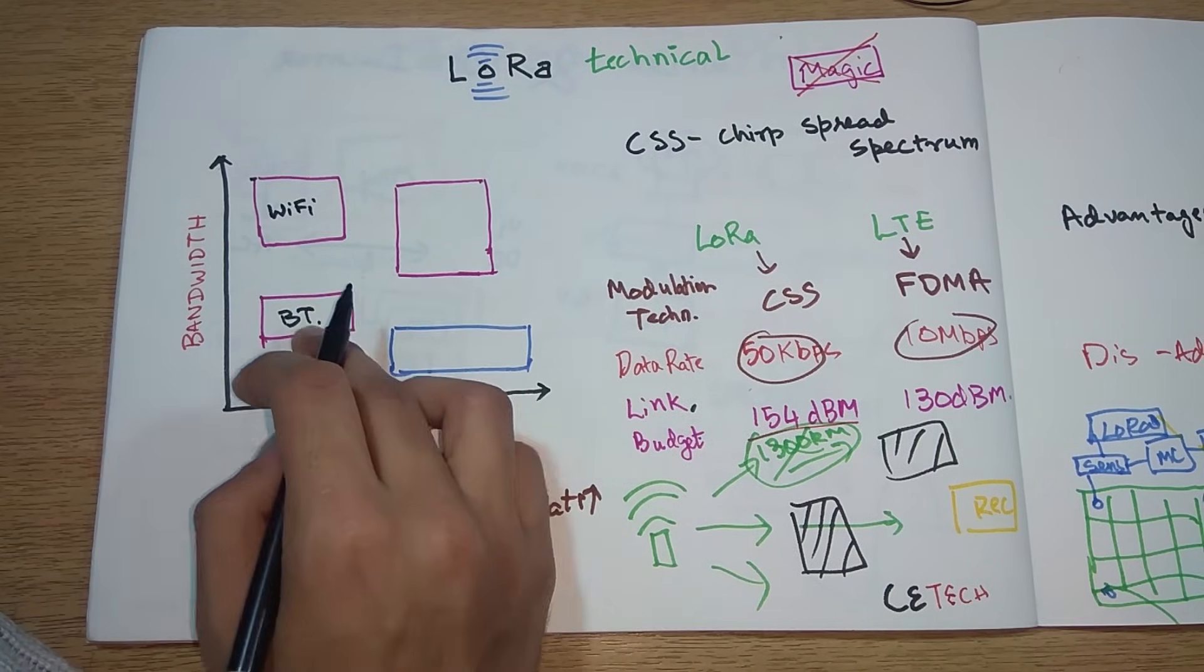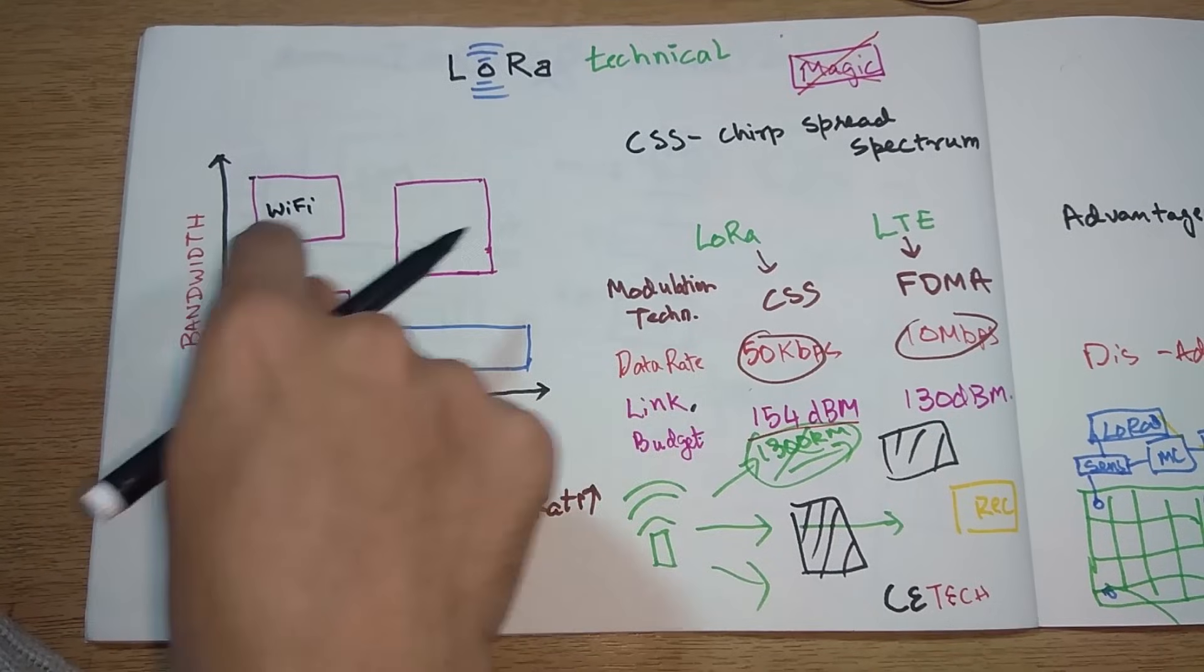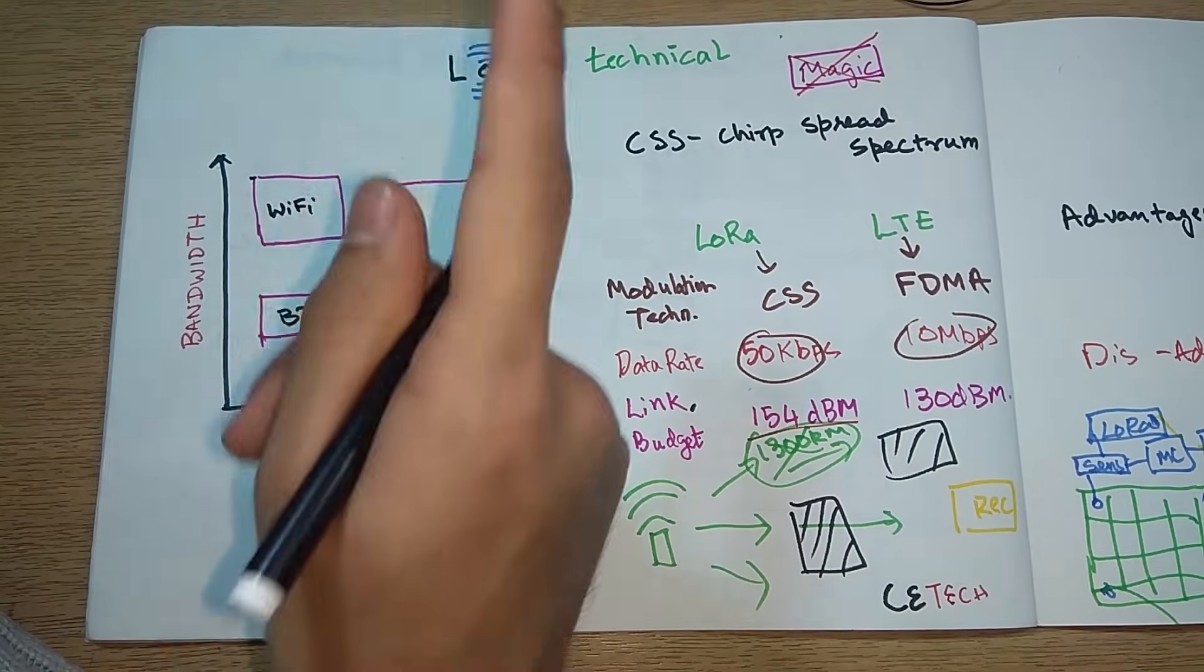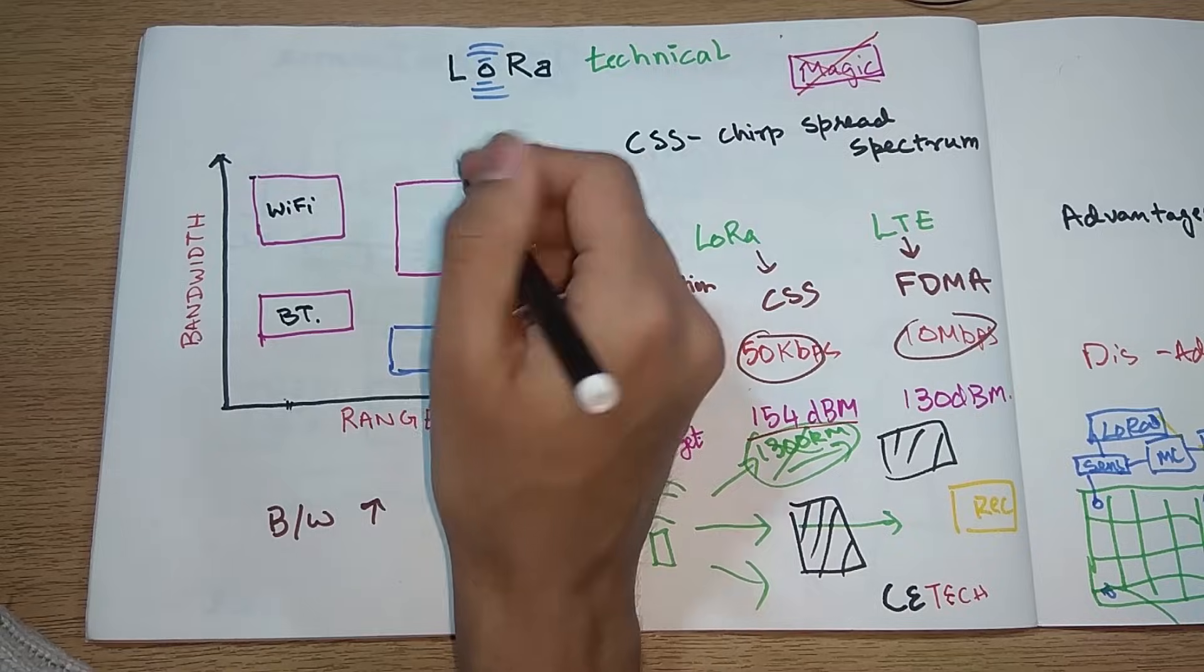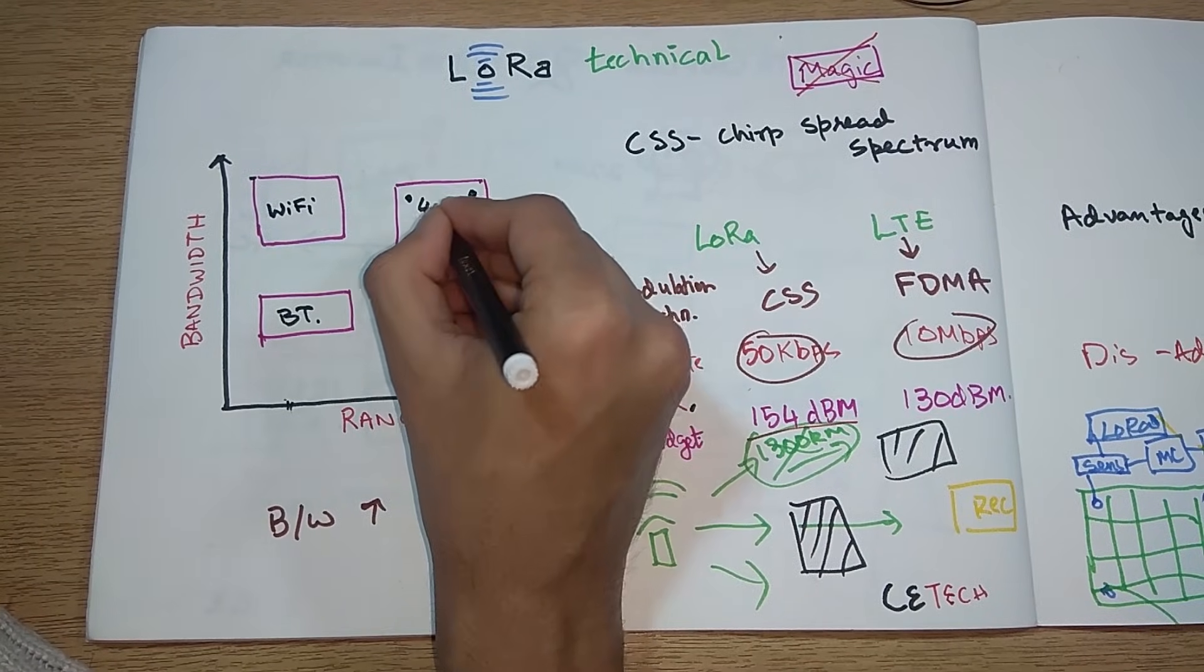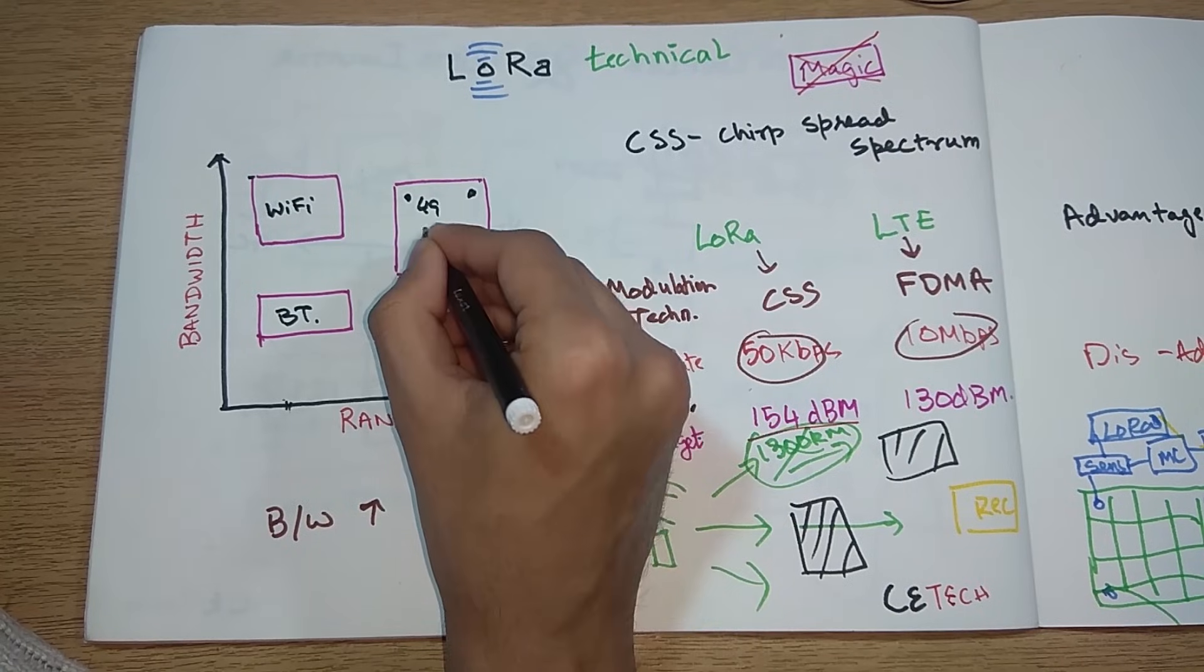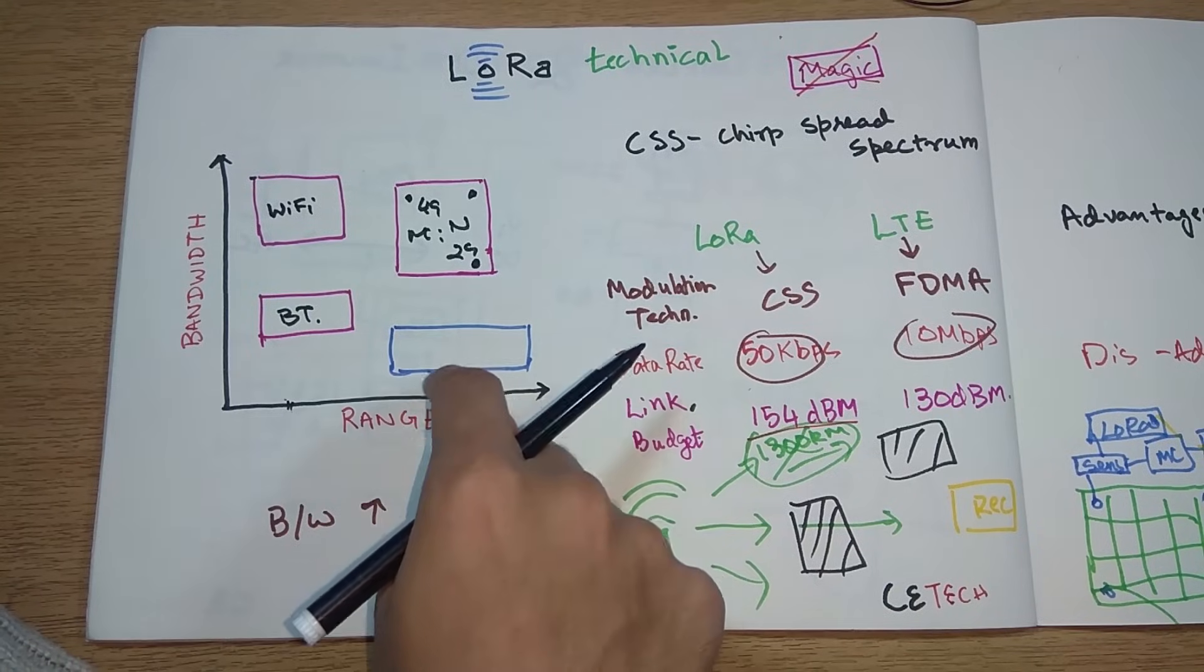On the other hand for the same range we have Bluetooth. Bluetooth has lesser bandwidth, you cannot stream videos with it, maximum you can stream audio, that also medium quality. This box with good range and good bandwidth is 4G, LTE, GSM.